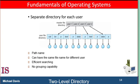Although the two-level directory structure solves the name collision problem, it still has disadvantages. This structure effectively isolates one user from another. Isolation is an advantage when users are completely independent, but it's a disadvantage when users want to cooperate on some task and access one another's files. Some systems simply do not allow local user files to be accessed by other users. If access is to be permitted, one user must have the ability to name a file in another user's directory. To name a file uniquely in a two-level directory, we must give both the user name and the file name. A two-level directory can be thought of as a tree of height 2.